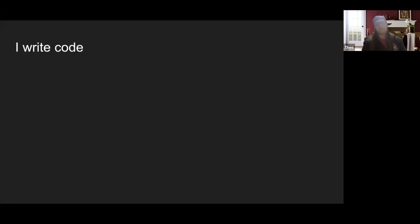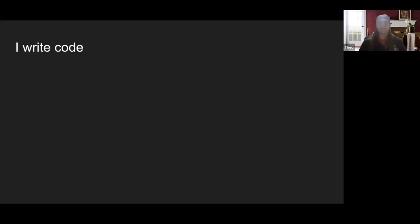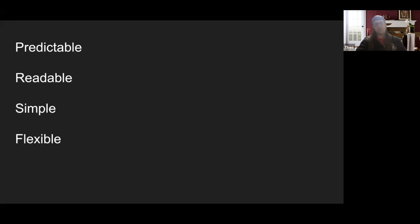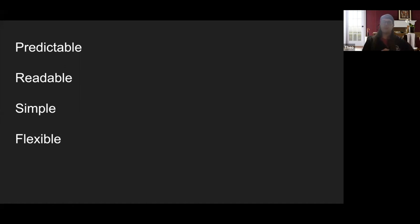Most importantly, I write code. I'm a developer just like you all. I sit down every morning, open my text editor, and think: how can I write code that'll be easier to maintain, that will last the long term? When I think about JavaScript, there are four principles that come up in modern JavaScript. Modern JavaScript is predictable, readable, simple, and flexible.